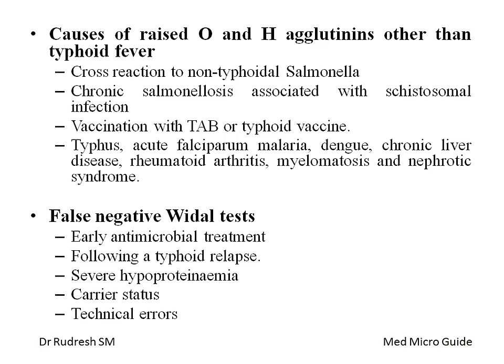False negative Widal results can occur if treatment is started early, as this prevents the full immunological response and decreases titers. Following a typhoid relapse, immunity is weakened, reducing antibody production. Severe hypoproteinemia, carrier status, and technical errors can also give rise to false negative Widal results.